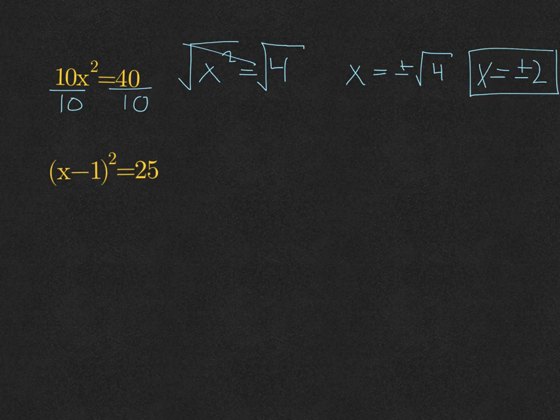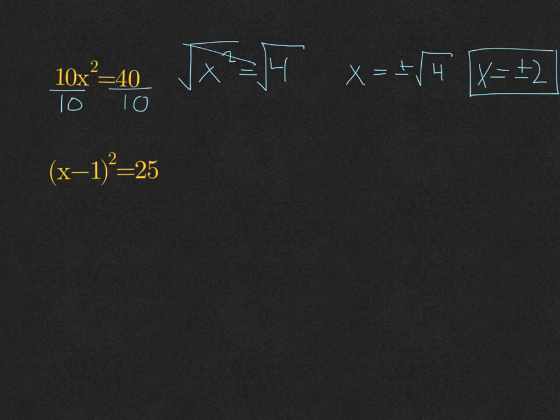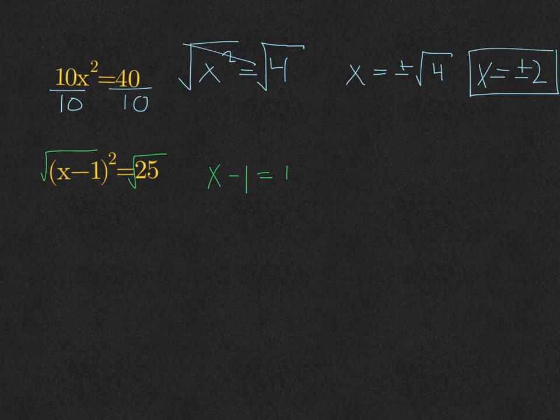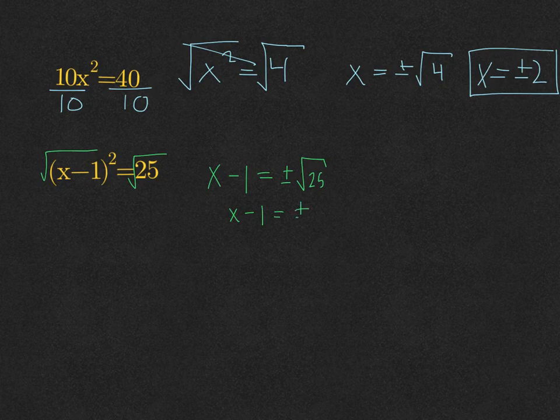Let's solve this next one. I have (x minus 1) squared equals 25. Take the square root of both sides, and we end up with x minus 1 equals plus or minus the square root of 25, which is plus or minus 5.